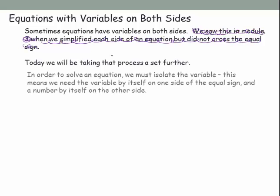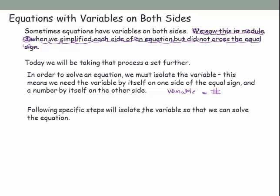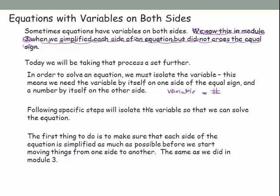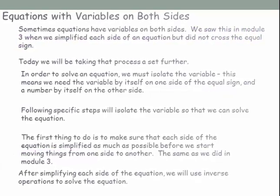Now we'll look at equations with variables on both sides. We need to isolate the variable — get it by itself on one side. The first thing we do is make sure each side of the equation is simplified, meaning like terms are combined on each side individually before we move anything from one side to the other.